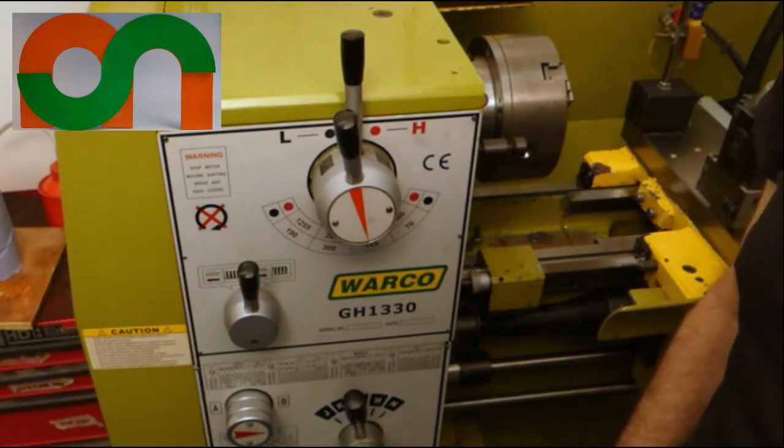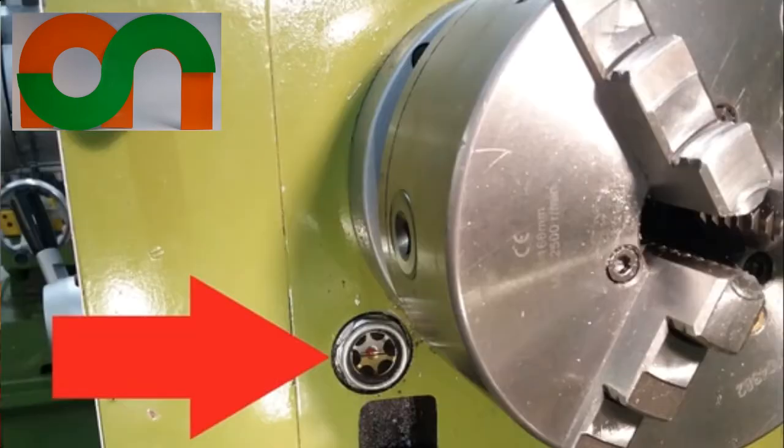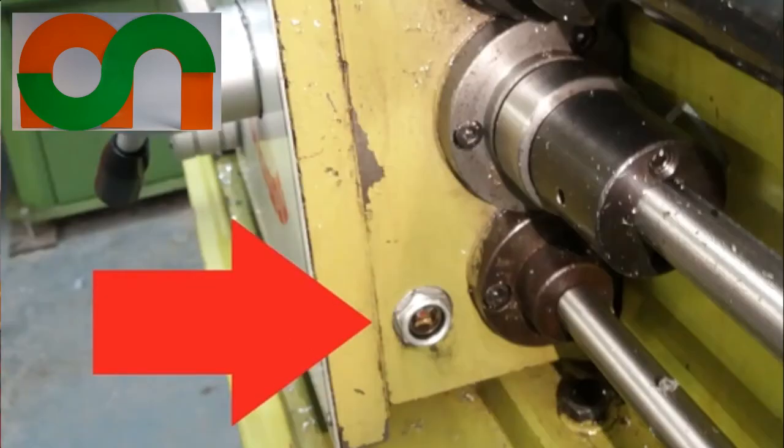The very first check you need to make when you start to use the lathe is the oil levels in the three gearboxes. Two in the headstock and the third under the carriage.